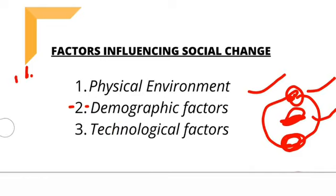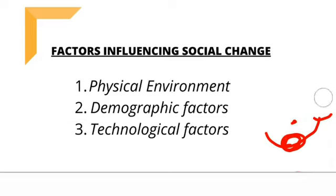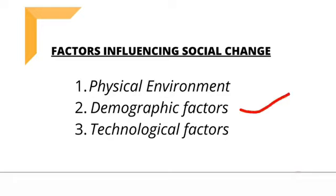Demographic factors ki baat karein toh, agar jis country ke andar fertility rate aur mortality rate kam hoga, us country ka standard of living achcha hoga. Jisme fertility rate aur mortality rate high hoga, wahan bohot zyada pareshaniyan hongi. Demographic factors jaise declining sex ratio aur changing age structure ka impact padega social aur economic life par. Agar mortality rate badh jaaye aur infertility rate zyada high ho, wahan ke logon ka standard of living automatically down jayega kyunki resources limited hain aur population over hogi.